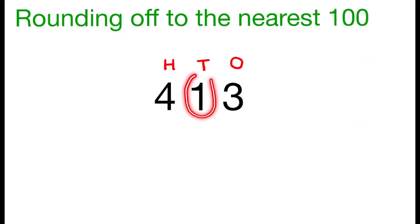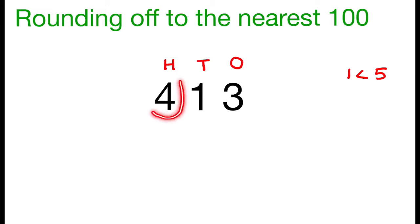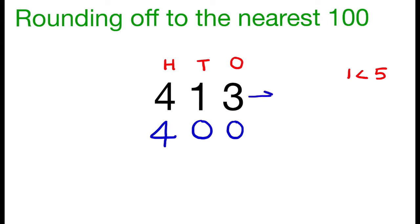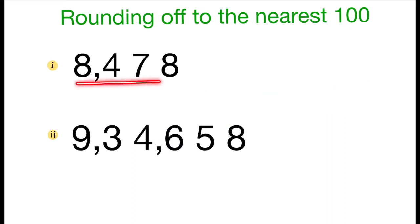Here, the digit in the tens place is 1, and 1 is less than 5. So, there will be no change for the digit in the hundreds place. We write 4 in the hundreds place. Since we are rounding off to the nearest hundreds, the digits in the ones place and tens place are 0. We write 0 in the ones place and in the tens place. The number 413 is rounded off to 400.